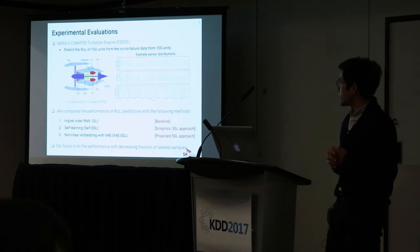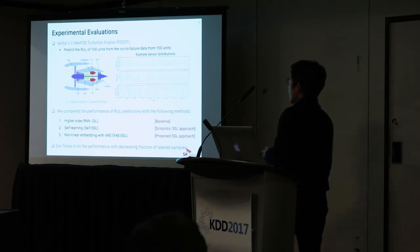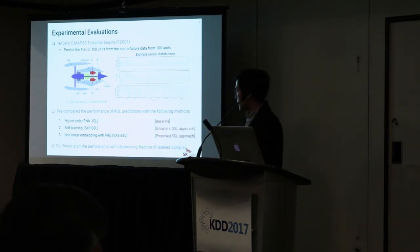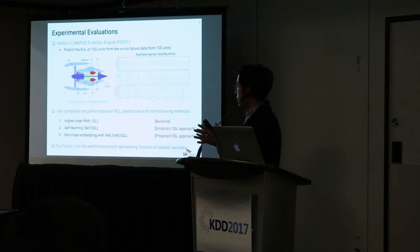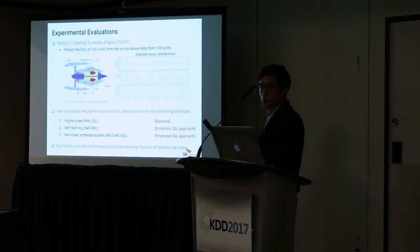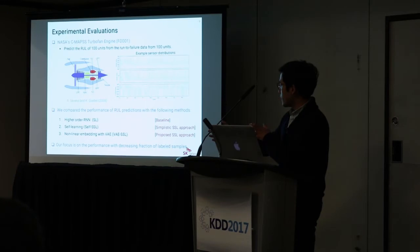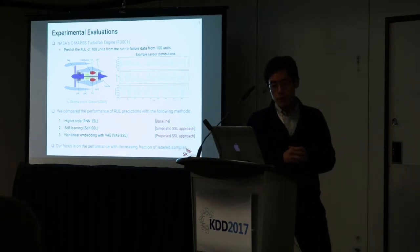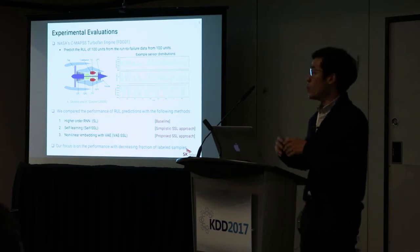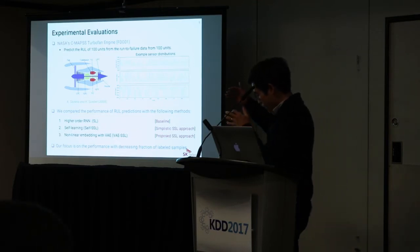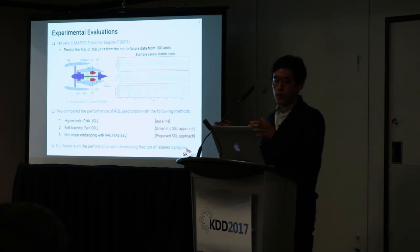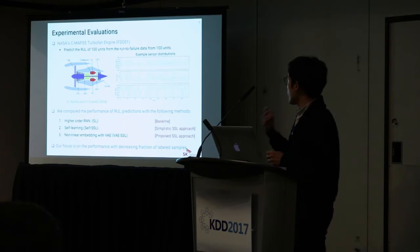We compare the performance of our RUL predictions against the following methods. The baseline is pure supervised training with a high-order RNN. The second method is self-learning, the simplest semi-supervised learning approach, which trains on labeled data, propagates labels using the weak learner, and retrains using the generated soft labels. The last is our proposed method. Our focus is on performance with decreasing fractions of labeled failure samples — out of 100 run-to-failure units, we assume only a fraction are known to have failed.